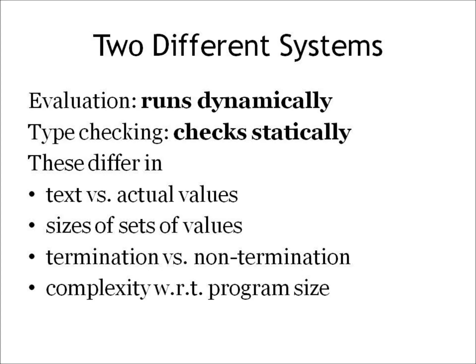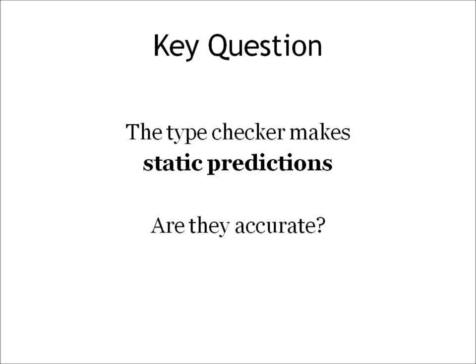In other words, the key question is this. The type checker is making a static prediction about the program's behavior. Is the static prediction accurate?